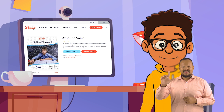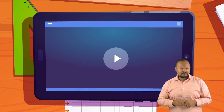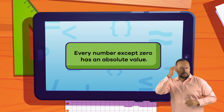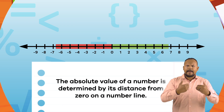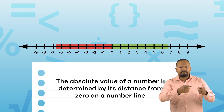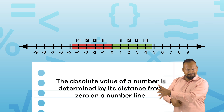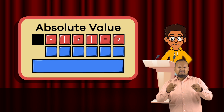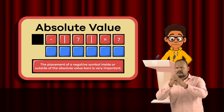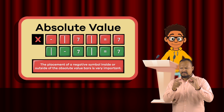Here are three things to remember about absolute value. First, every number except zero has an absolute value. Second, the absolute value of a number is determined by its distance from zero on a number line. Last, the placement of a negative symbol inside or outside of the absolute value bars is very important.